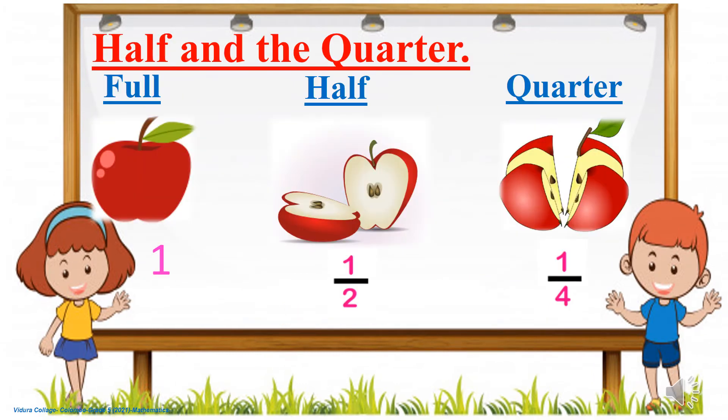Now we are going to learn about half and quarter. Here I have a full apple, which is the unit — the whole. That one apple, the full apple, is cut into two equal pieces. One piece out of two is one half. Half is written as one over two. One is the numerator, two is the denominator.